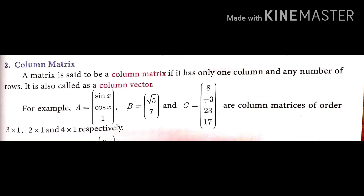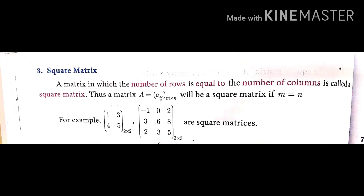Check the order of these matrices: the first one is 3×1, the second is 2×1, and the third, matrix C, is 4×1. The columns are only one in each case, so these types of matrices are called column matrices.